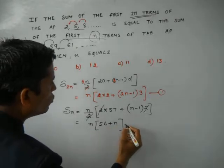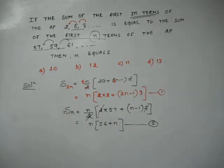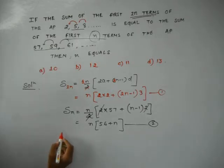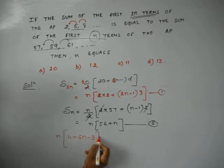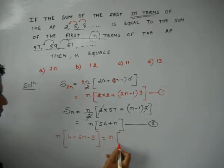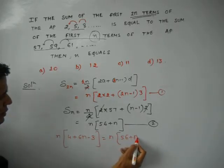then we know both the sums are equal. So, we can equate both the things. And when we are equating, we know that n again we can take common. So, it is 4 plus 6n minus 3. This is same as 56 plus n.